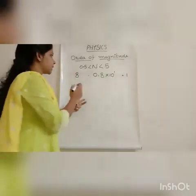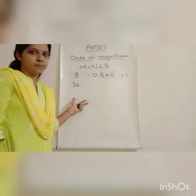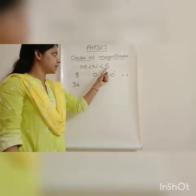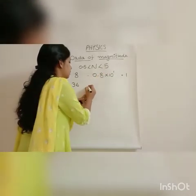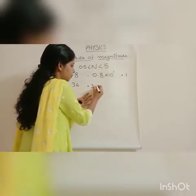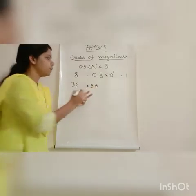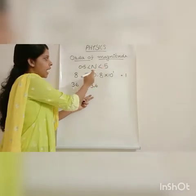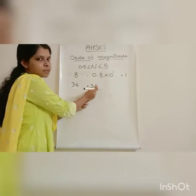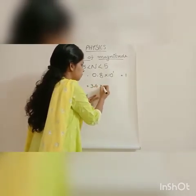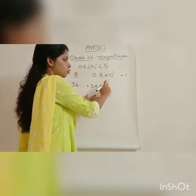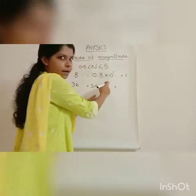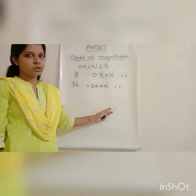Now consider the number 36. The magnitude 36 is greater than 5. So we convert the number 36 to 3.6 by placing a decimal mark. The magnitude 3.6 is less than 5 and greater than 0.5. So we write 3.6 into 10 raised to 1, since 3.6 times 10 gives 36. Here again the power of 10 is 1, so the order of magnitude is 1.